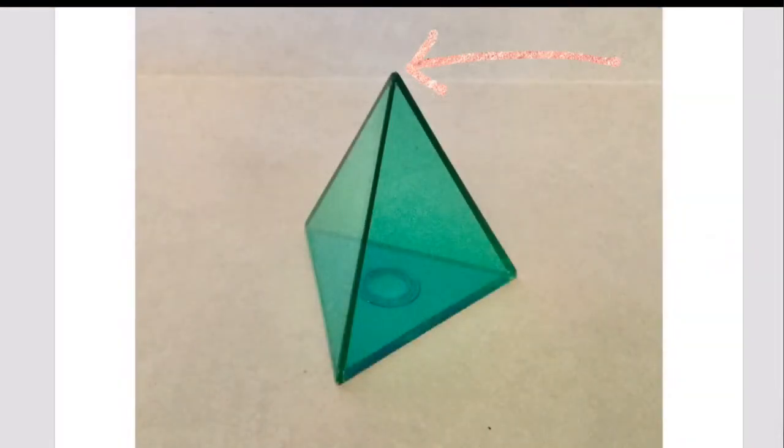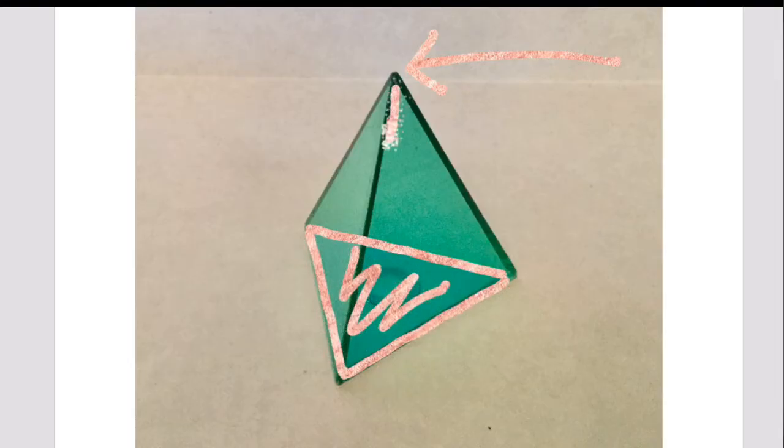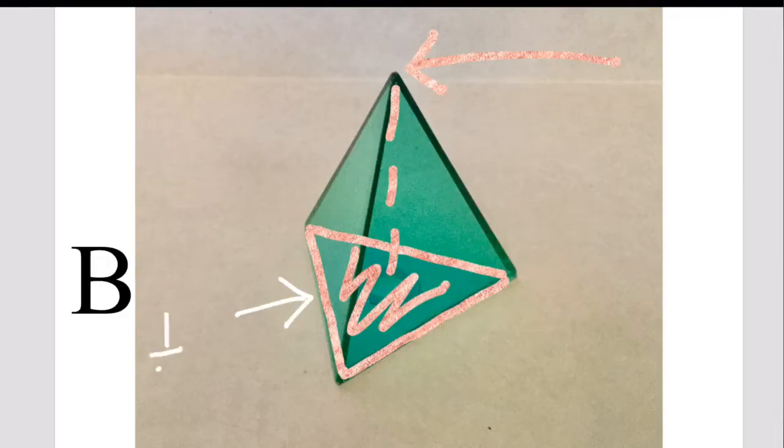The only difference in this pyramid is the base. Now you are looking at a triangle. The area formula for a triangle is different. It's one half base times height.